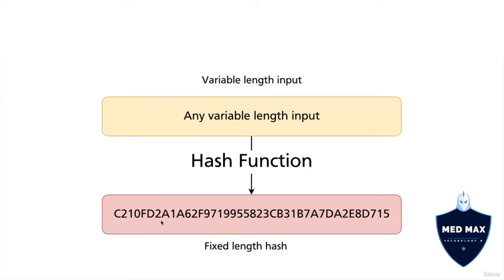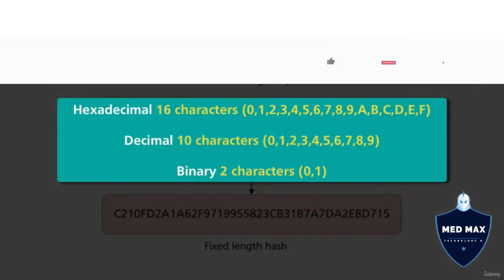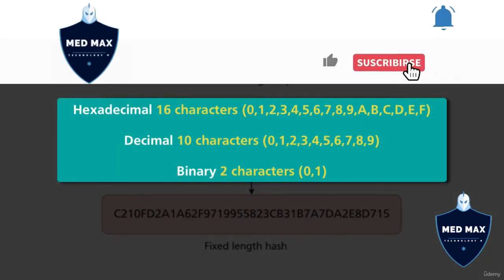This hash is represented in hexadecimal characters. That's why you see such letters as C, F, D and A here. In hexadecimal format, there are 16 different characters.